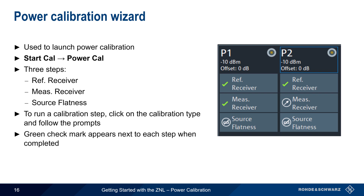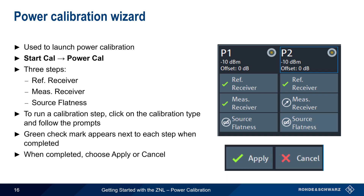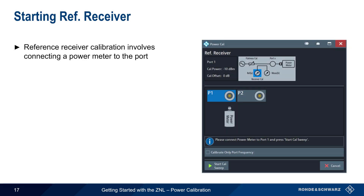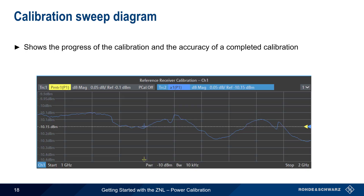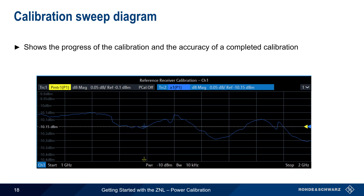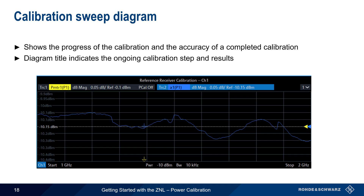Reference receiver calibration involves connecting a power meter to the port being calibrated — generally a Rohde & Schwarz NRP Series RF power sensor. Once the sensor is connected, simply press Start Cal Sweep to run the calibration, which only takes a few seconds to complete. At the top of the power calibration window, a calibration sweep diagram shows the progress and accuracy of the completed calibration. These diagrams are also available for other steps, and the title of each diagram indicates the current calibration step and the measured calibration results.